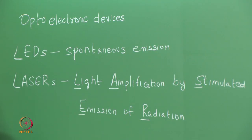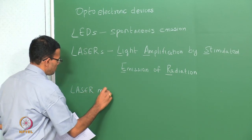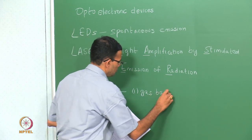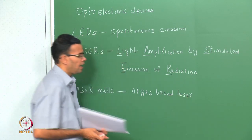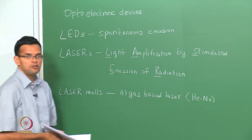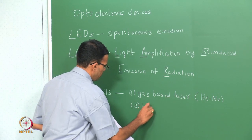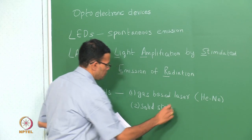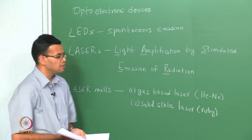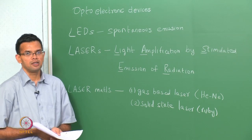There are a large number of laser materials that are possible. For example, you can have a gas-based laser — a typical example would be a helium-neon laser. You could also have a solid-state laser based on a material that is not a semiconductor, for example ruby lasers. In today's lecture we are going to focus specifically on semiconductor-based lasers.